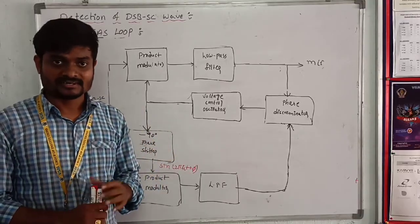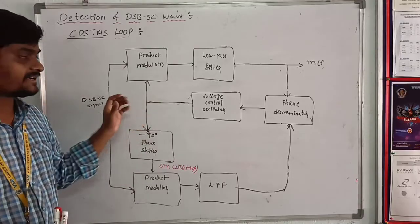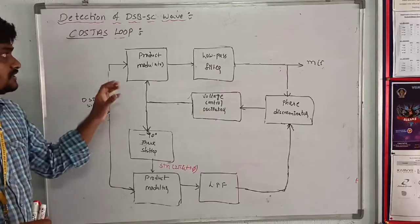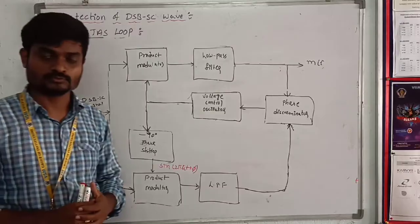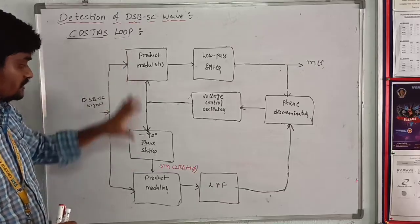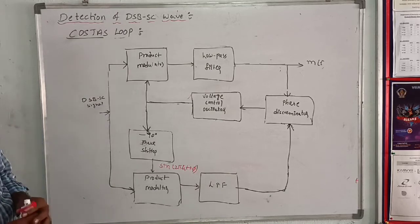Costas loop is a method of obtaining a practical synchronous receiving system suitable for demodulating DSB-SC waves. The receiver consists of two coherent modulators. This is one coherent modulator, this is the other coherent modulator.